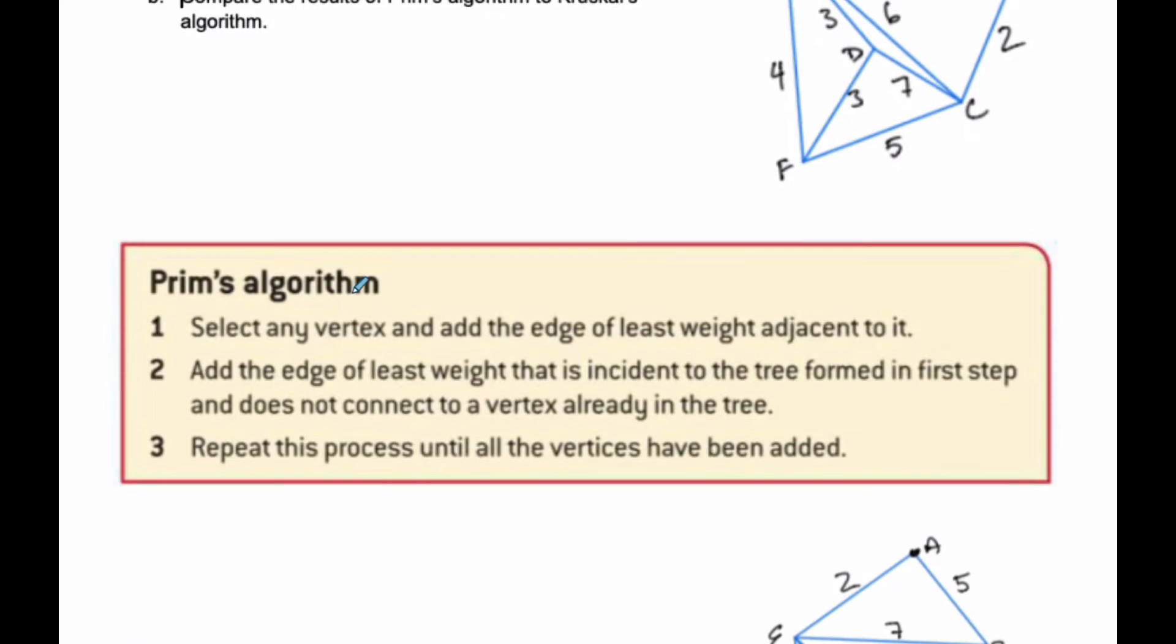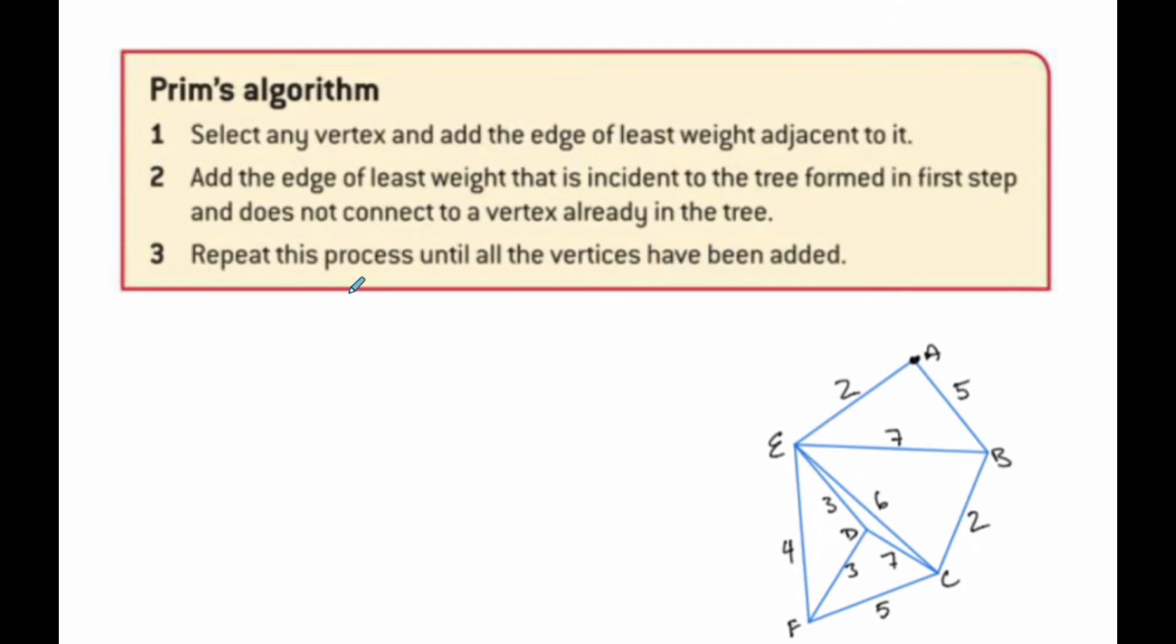We need to know what Prim's algorithm is. With Prim's algorithm, we select any vertex and add the edge of least weight adjacent to it. Then we add the edge of least weight that is incident to the tree formed in the first step and does not connect to a vertex already in the tree. We repeat this process until all vertices have been added.